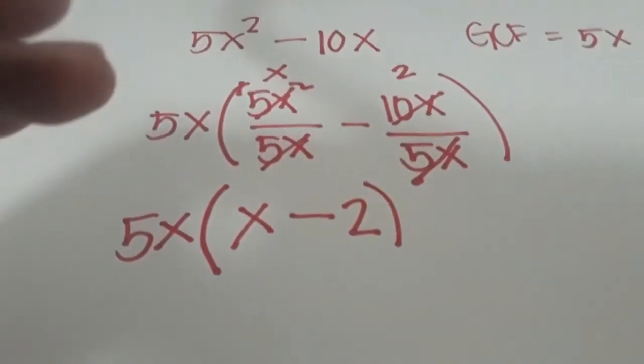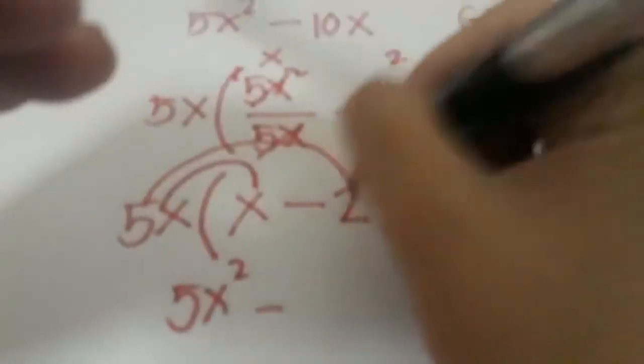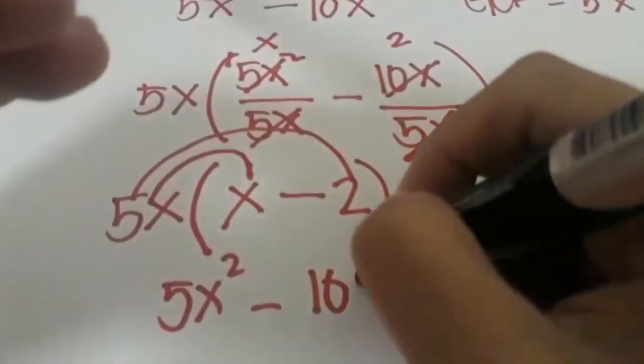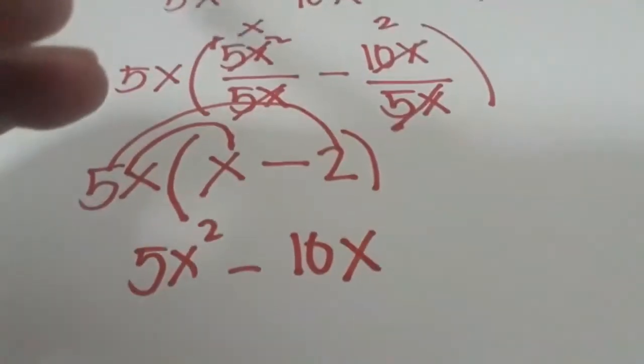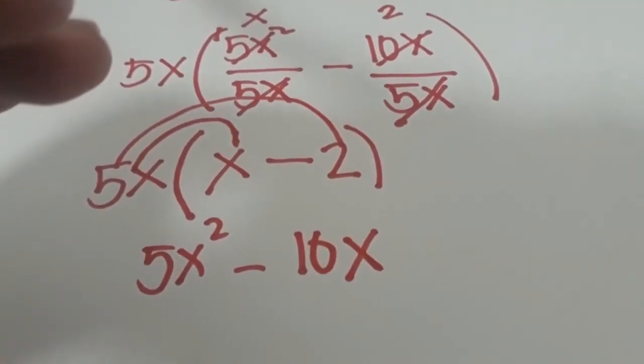And by checking using the distributive property to verify, you would know that this is 5x² and then this one is 10x.